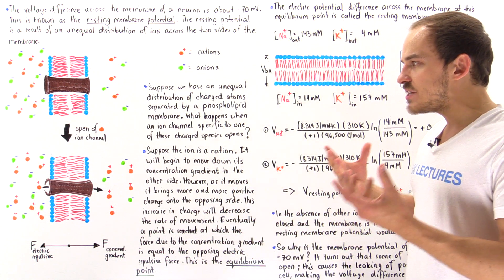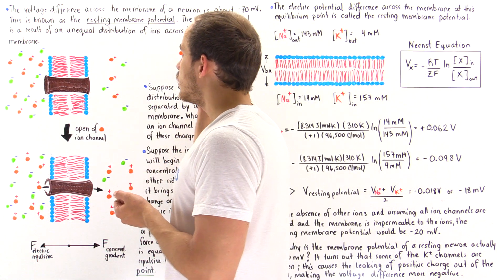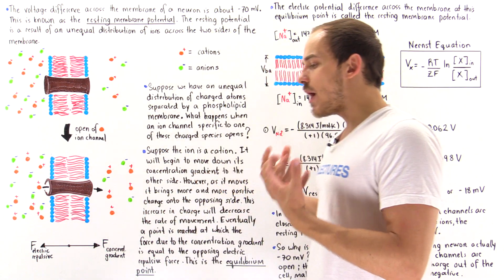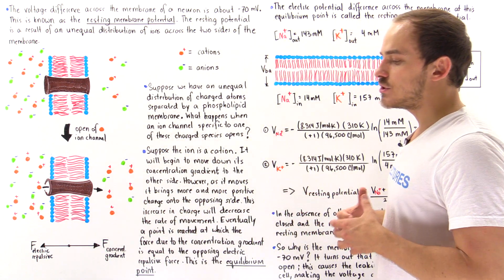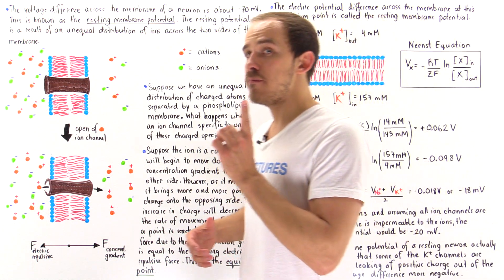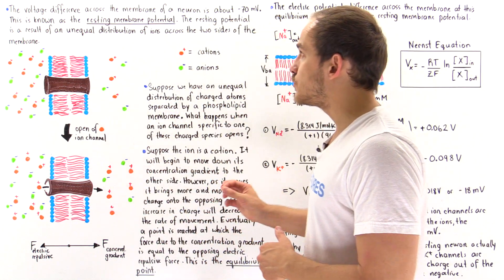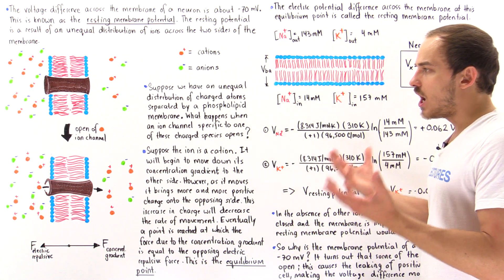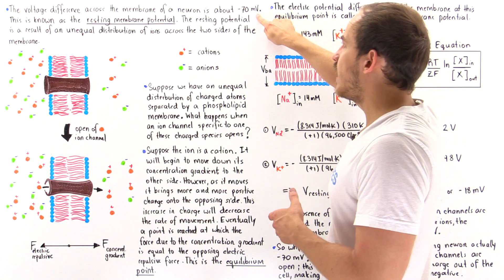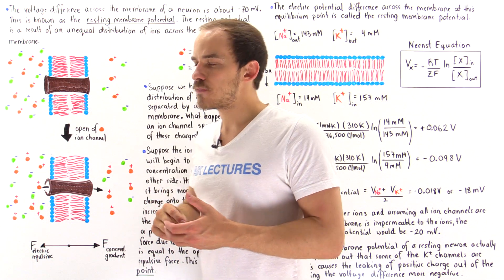The question is: what exactly establishes the resting membrane potential? Where does it actually come from? And more precisely, how can we actually measure the resting membrane potential of a cell? How can we calculate the value of negative 70 millivolts?